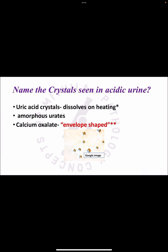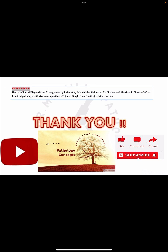The next question is: name the crystals seen in acidic urine. These are uric acid crystals, which dissolve on heating; amorphous urates; and calcium oxalate crystals, which have a characteristic envelope shape, though they can also appear as dumbbell-shaped or oval. The envelope shape is most commonly tested in exams. These were the important viva questions for urine microscopy. Any questions can be typed in the comment section — thank you very much.